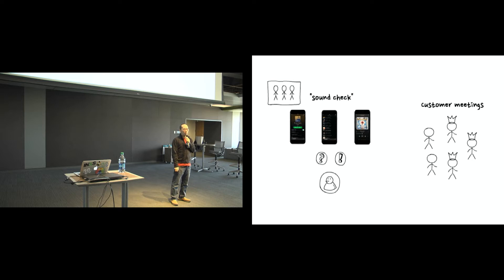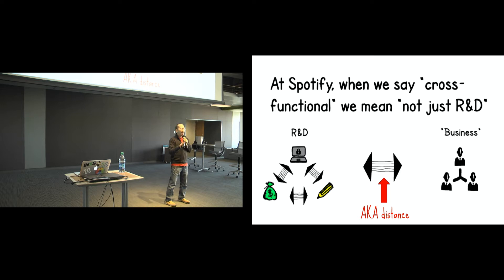The other thing from an internal perspective is customer meetings. Getting people, this is more for typically internal applications, getting like you have a direct engagement with people you're building stuff for. That type of problem, even though it's still there, it's getting better. But if I zoom up a bit, same type of problem, but I'm going to zoom up a bit. At Spotify, when we say cross-functional, we're not talking about different skills within a team. We're talking more about the difference between what we call R&D and what we call business.